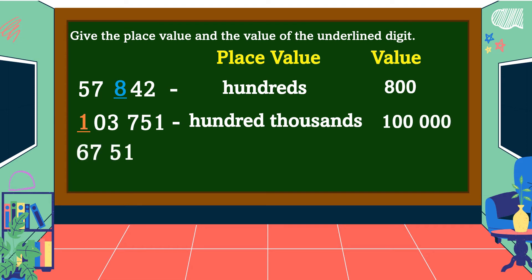Next number. The underlined digit is 4. What is the place value of 4? It is ones. What is the value of 4? Very good — the value of 4 is 4.